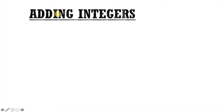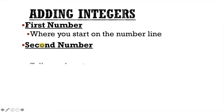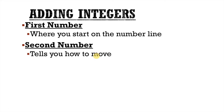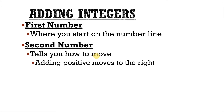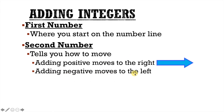Now let's talk about adding integers using the number line. We're going to talk about basic addition statements that have two numbers. The first number tells us exactly where we're going to start on the number line, and the second number is going to tell us how to move. If we're adding a positive number, it means we're going to move to the right. And if we're adding a negative number, it means we're going to move to the left.